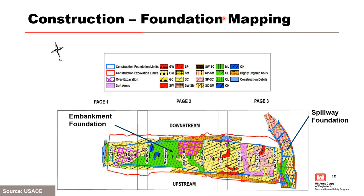Foundation mapping is a critical part of any project, whether the foundation is soil or rock. On this project, proof rolling observations and over-excavations were all mapped by a USACE geologist. Foundation mapping is critical because it is the only time that foundation will ever be exposed. Any issues that arise in the future — such as seepage, settlement, or cracking — can be referenced against those records for future risk assessments or modifications. Over-excavated areas and all foundation materials were carefully mapped.